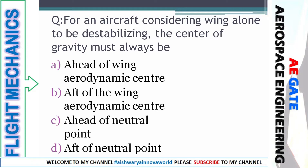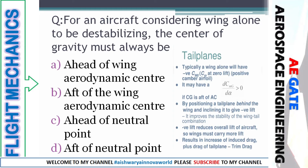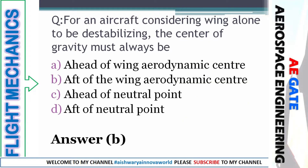Third question: for an aircraft considering the wing alone to be destabilizing, the center of gravity must always be — ahead of the wing aerodynamic center, after the wing aerodynamic center, ahead of the neutral point, or after the neutral point. These are very important conceptual questions. Remember that the wing alone will be destabilizing — that is, dCm/dα is positive — when the center of gravity lies ahead of the aerodynamic center. So the right answer is answer B.